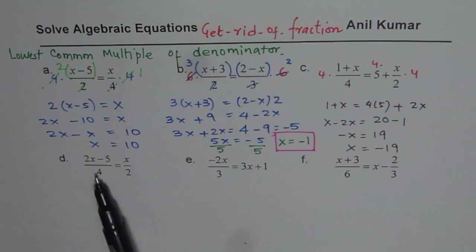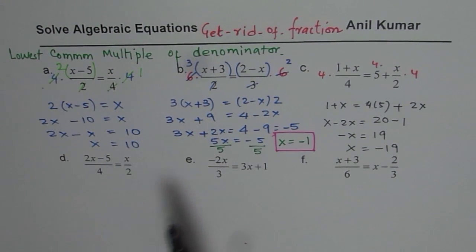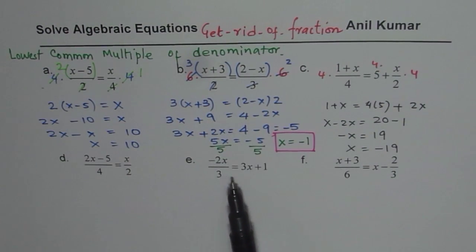Now follow this same strategy and solve these three equations. So here, you have to multiply both by 4, then simplify as we did here. Correct? In this case, there is only one denominator, 3. So just multiply 3x plus 1, both by 3. And here also by 3, 3 and 3 will cancel.